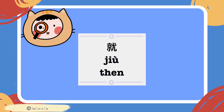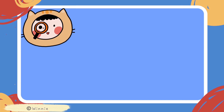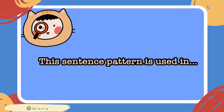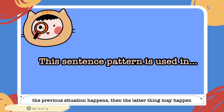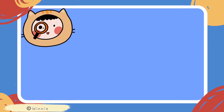就 means 'then'. This sentence pattern is used when a previous situation happens, then the later thing may happen. For example: